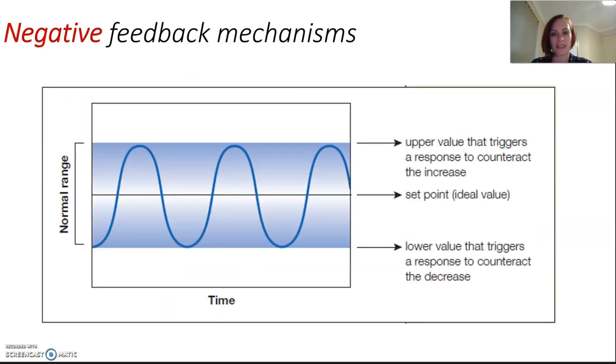Negative feedback mechanisms are really easy to get our head around. It involves a response that is the reverse of the change that is detected. We ebb and flow around that central normal point. If this is our ideal value and something is changing up, our body tries to correct it back down, then it might overshoot and tries to bring it back to the middle again. A change is detected by a receptor, and an effector is activated to induce an opposite effect, promoting equilibrium.